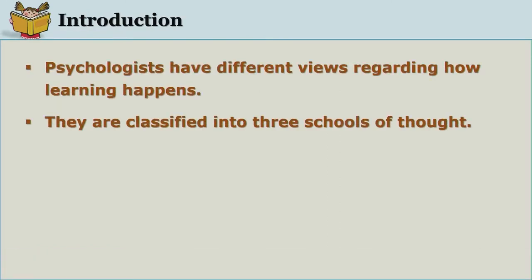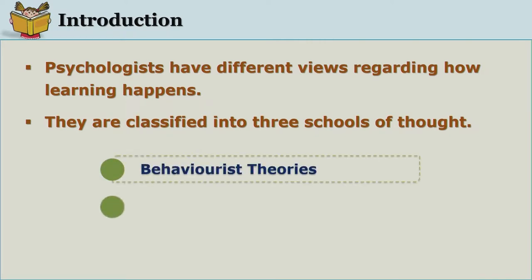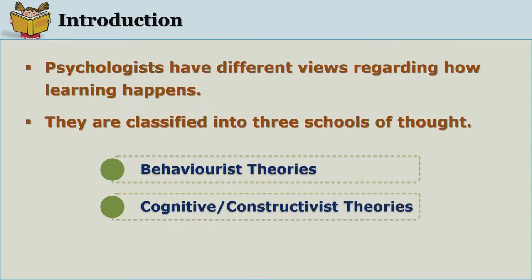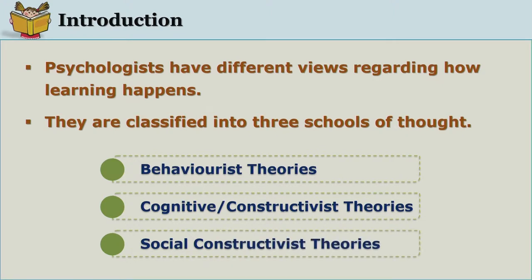Psychologists have had different views regarding how learning happens. People were curious to know what happens in our mind when we learn, but not all agreed that the mind is responsible for learning. Because of this, there were three differences of opinion, and therefore we say there are three schools of thought: behaviorist theories, cognitive or constructivist theories, and social constructivist theories.